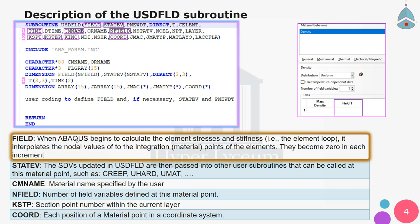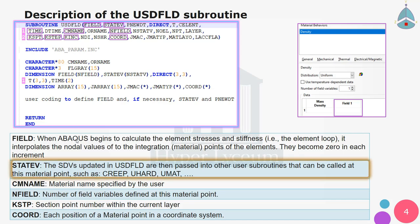Because we use tabular data, Abaqus needs to do interpolation between cells to calculate the field variable. Since field variables are memory-less and become zero in each increment, we have to use state variables to save them. The difference between field variables and state variables is that state variables are not memory-less.